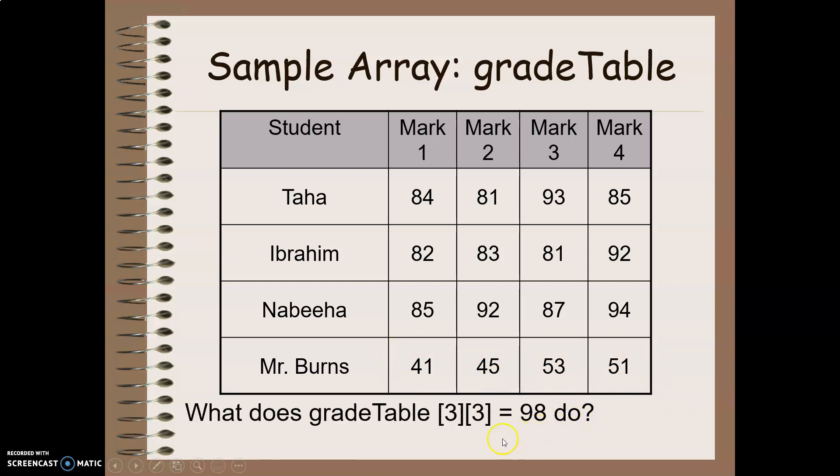I can set individual values in my table, because clearly Mr. Burns should not be getting a 51. He should be getting a 98. So if we go position zero, one, two, three, zero, one, two, three, I can change that mark to something else. I can also use data incrementation and decrementation. So gradeTable[3][1], zero, one, two, three, zero, one. I can increase this by one.